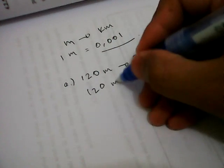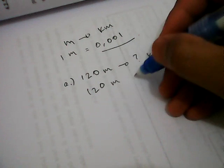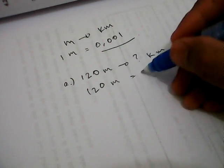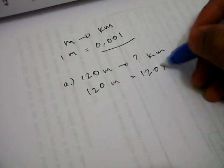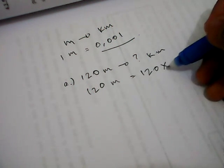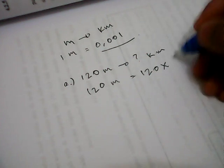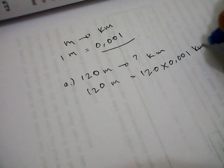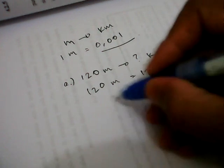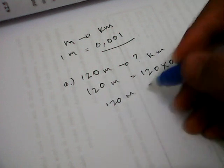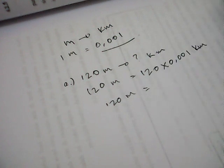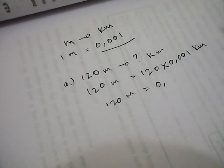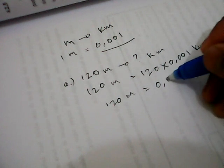120 meters equals 120 multiplied by 0.001 kilometers. So 120 meters equals 0.1, 1 and 2—it equals 0.12 kilometers.